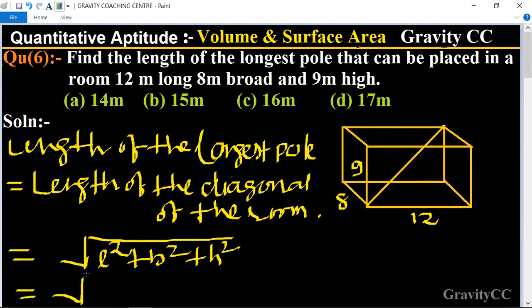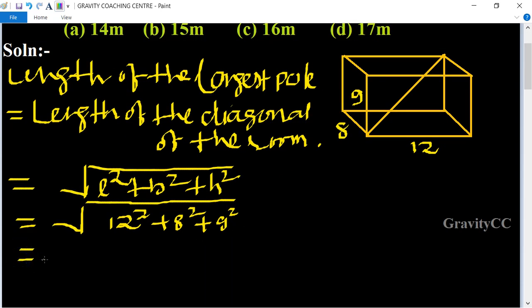Equal to 12 square plus 8 square plus 9 square, equals root under 144 plus 64 plus 81, equals root of 289.